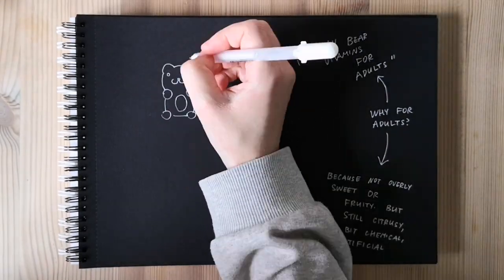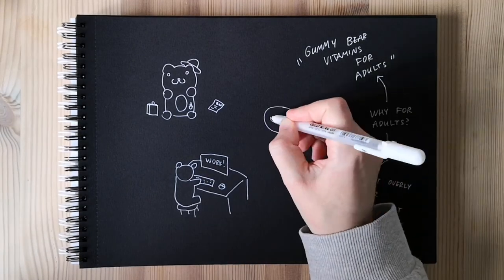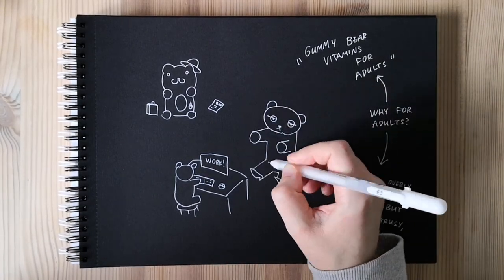What would an adult gummy bear look like? A tiny business owner? An office worker? Or a cheeky underwear model?